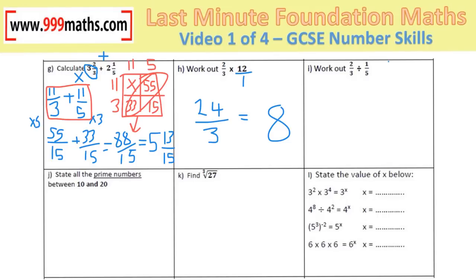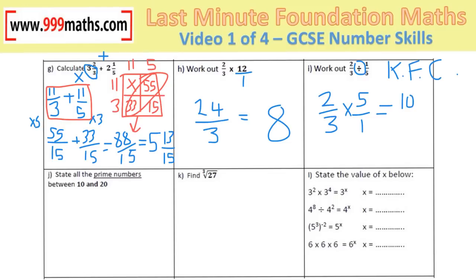2/3 divided by 1/5: dividing fractions requires keep, flip, and change — keep the first one the same, flip the second one over, and change it to a multiply. Multiply the tops and the bottoms. If simplifying is required, 10 divided by 3 is 3 and a third.